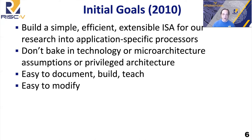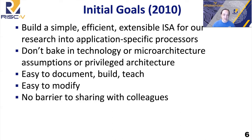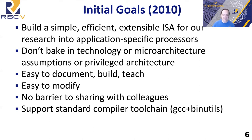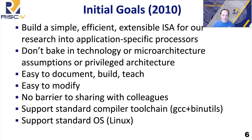It obviously had to be easy to modify because we were going to do research with it — this was one of the problems with existing proprietary ISAs, it was difficult to change them without losing all the software. In previous projects, we tried to use commercialized ISAs and had the problem of being unable to share RTL with colleagues, so one goal was to have no barrier to sharing designs. We also wanted to support a standard compiler toolchain and standard operating system so we could get software up and running on these cores quite quickly.